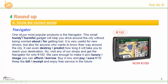Okay, let's start. One of our most popular products is the Navigator. This small, handy gadget will help you drive around the city without being worried about getting lost. It's very useful for new drivers, but also for anyone who wants to know their way around the city. It can even predict how long it will take you to reach your destination. So visit any of our shops and get the Navigator for only 100 euros. We care enough to make it a luxury you can afford. Buy it now and save 15 euros. Keep the receipt and enjoy free service in the future.